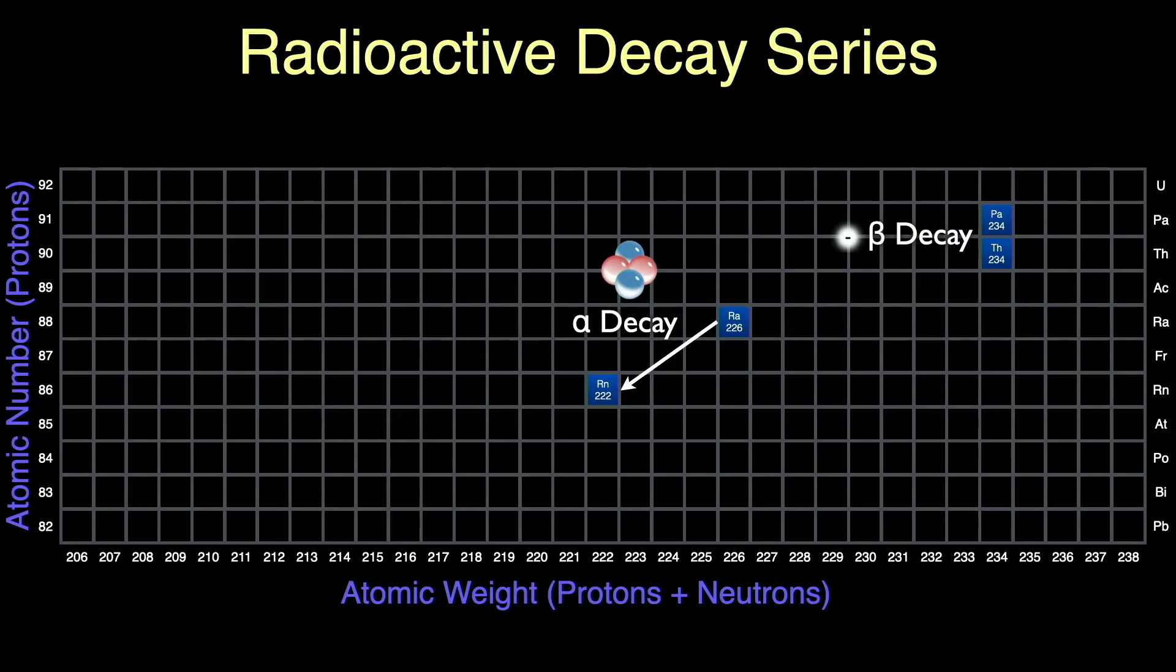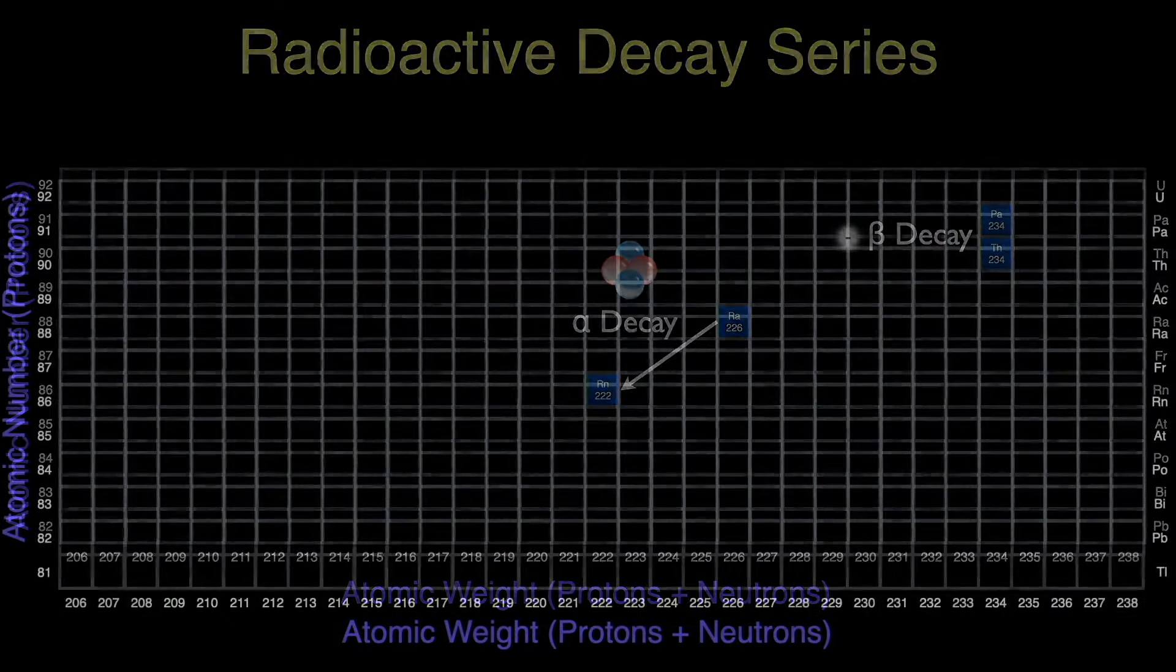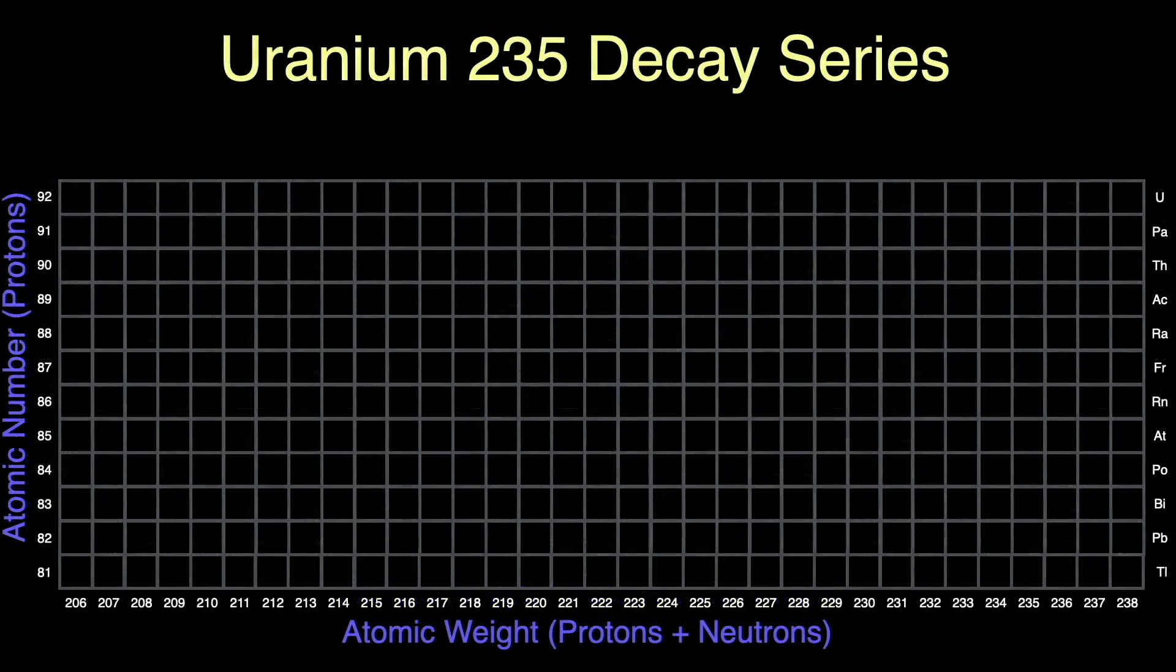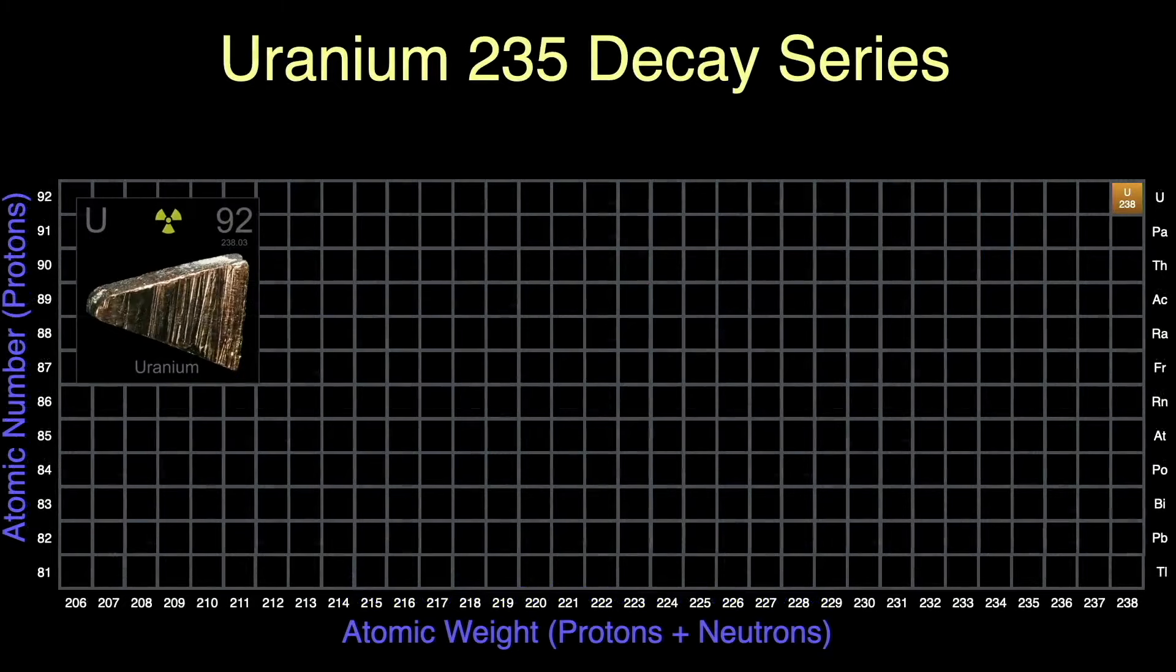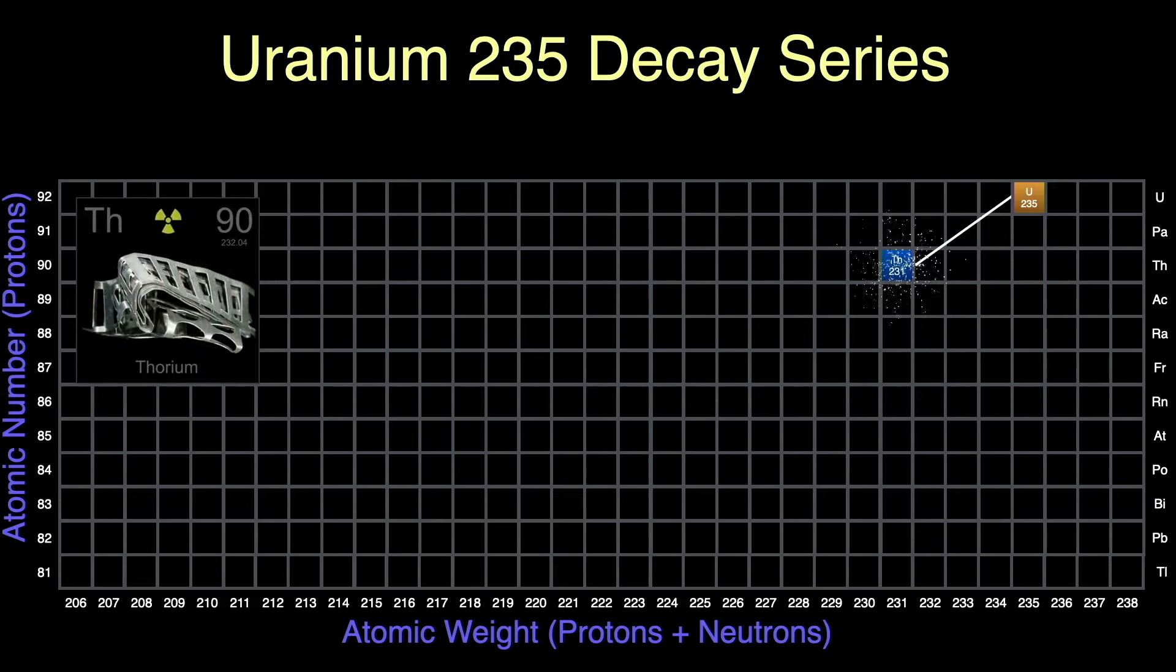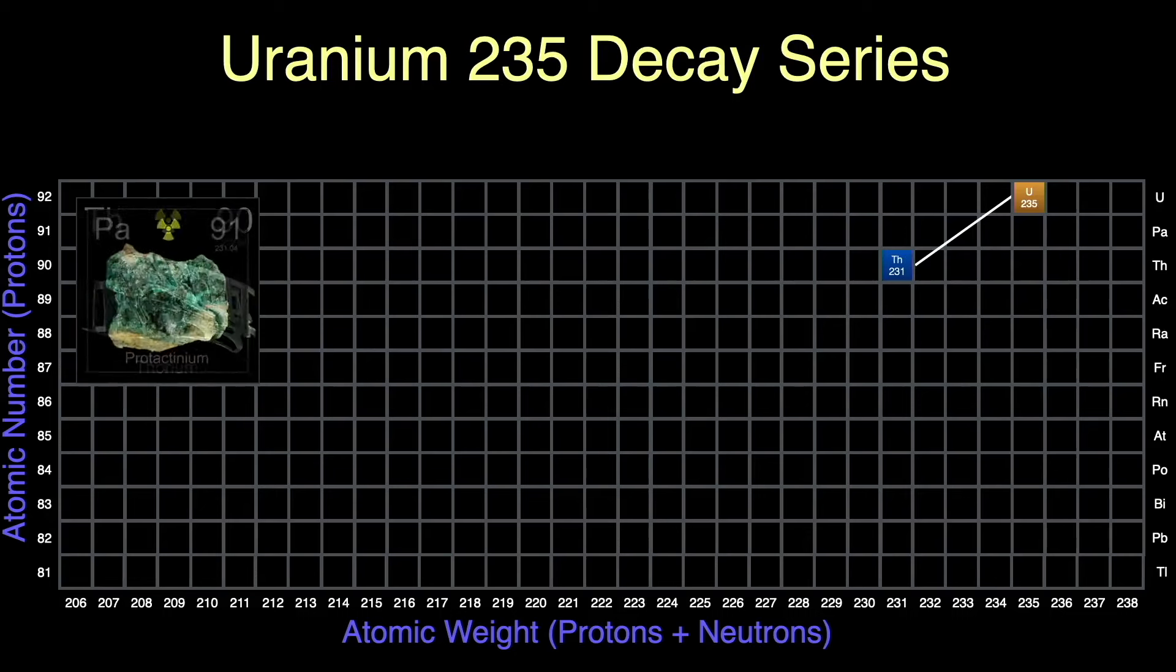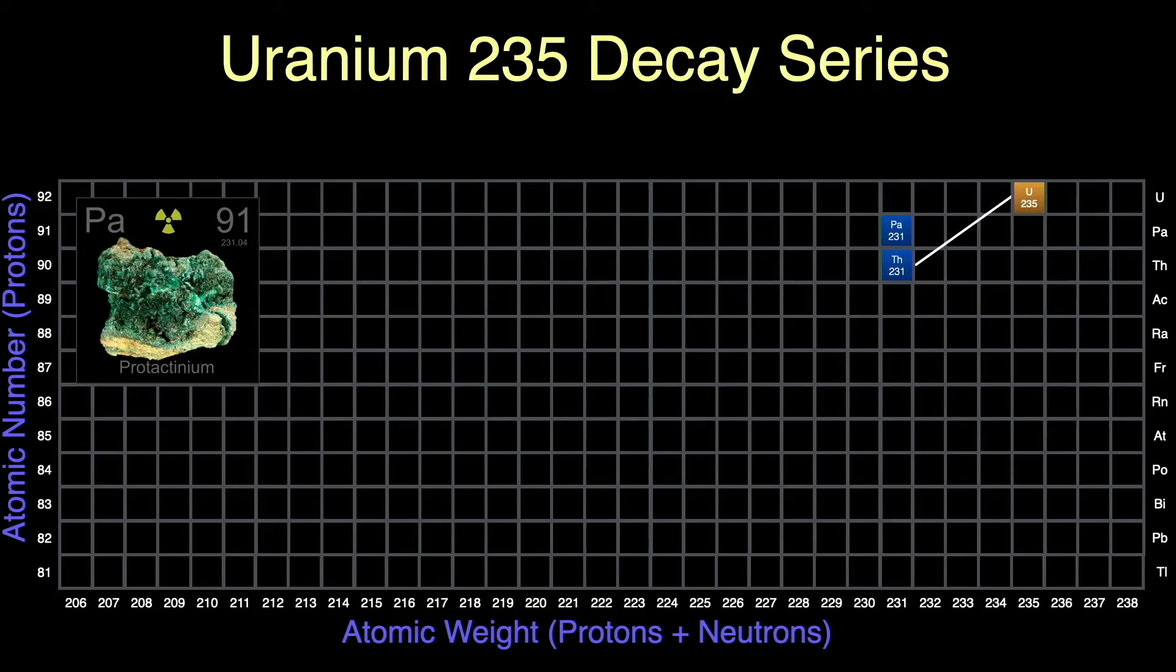Now, let's look at the complete uranium decay chain. Natural uranium is mostly uranium-238. A small portion, only 0.7% is the isotope uranium-235. This is our starting point for this decay chain. U-235 has a half-life of 700 million years. It decays by alpha into thorium-231. Thorium-231 decays by beta, remember we move up one square for betas, into protactinium-231.